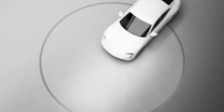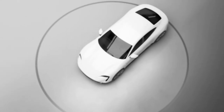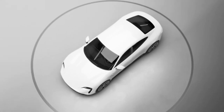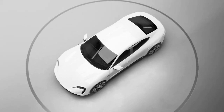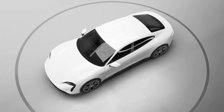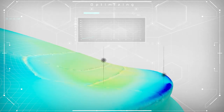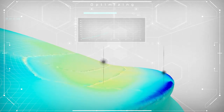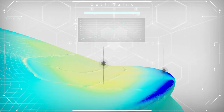In this video we're going to discuss aerodynamic shape optimization using the adjoint technique. Here's a short teaser showing you what this looks like applied to the rear of a Porsche Taycan.